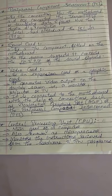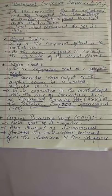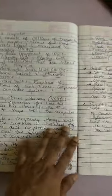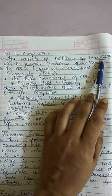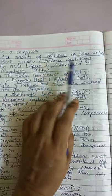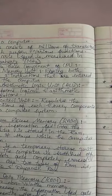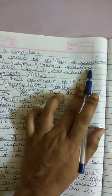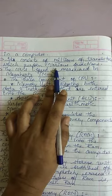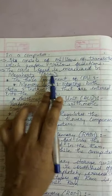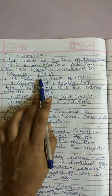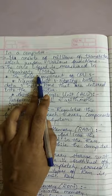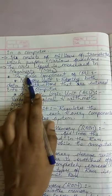The microprocessor monitors the instructions received from the hardware and software programs. It consists of millions of transistors which perform various functions. The CPU's speed is measured in megahertz.